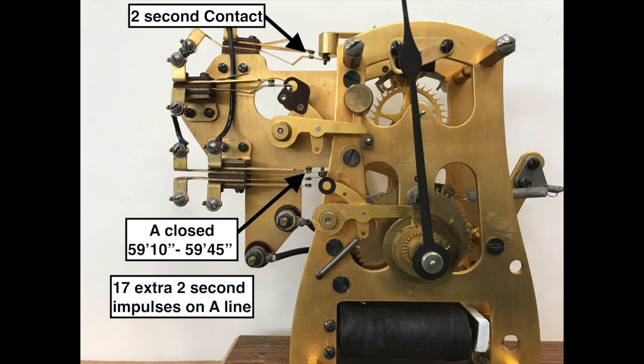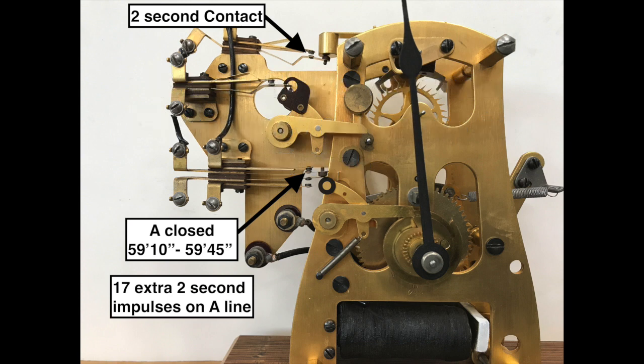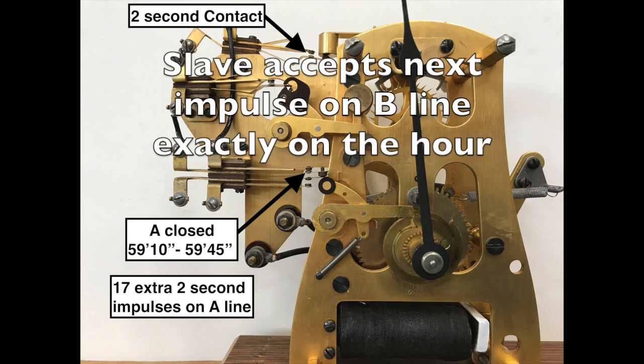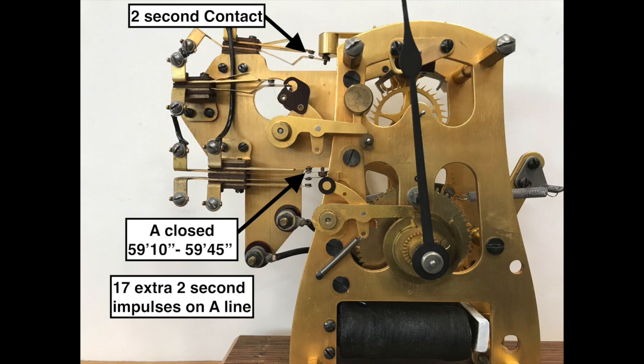At the slave's 59th minute, the AB switch changes the contact from A to B so any additional A line 2 second impulses are not accepted. The slave will accept the next impulse from the master on the B line. This will be exactly on the hour and the synchronization is now complete.